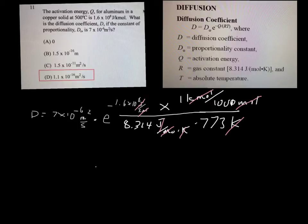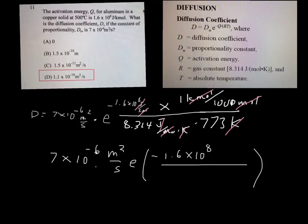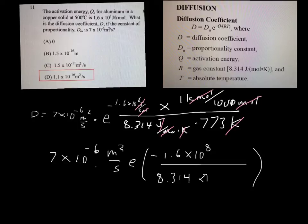I'm going to simplify this expression. I've got negative 1.6 times 10⁸ and on the bottom 8.314 times 773 times 10³, and that accounts for this value right up here.